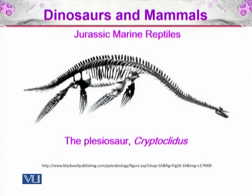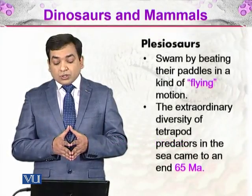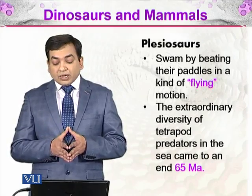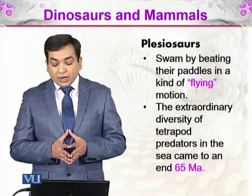Here you can see the plesiosaur Cryptoclidus, which has a very long neck and very small head. It would approach its prey with the neck in a retracted position, then extend it forward to capture prey. Its paddles are much more like wing-like structures. They swim by beating their paddles in a kind of flying motion through which they would move in the ocean.